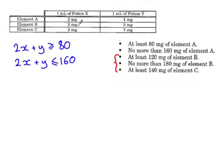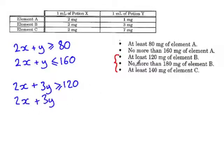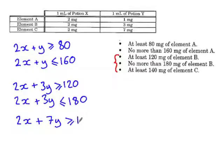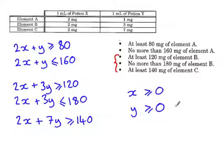Element B comes from 2mg per millilitre of potion X and 3mg per millilitre of potion Y. We need at least 120mg but no more than 180mg. Element C comes from 2mg per millilitre of potion X and 7mg per millilitre of potion Y, and we need at least 140mg. There are also two more inequalities not explicitly stated but obvious from context: x and y cannot be negative, so x ≥ 0 and y ≥ 0. Always look out for these implicit inequalities.